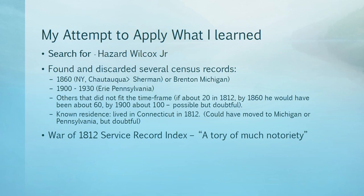I found and discarded several census records. For example, I knew that my Hazard lived around the early 1800s, so the 1860 census in Chattanooga probably didn't apply, nor did the 1900 to 1930 Erie, Pennsylvania records because he probably would have died by then. There were others that did not fit the time frame. I knew also that he had lived in Connecticut — he could have moved to Michigan or Pennsylvania, but it's doubtful. I did finally find him in the War of 1812 Service Record Index, where it's noted that he was a Tory of much notoriety. That would explain why the Wilcox family moved to Canada for several years and then returned to the United States.